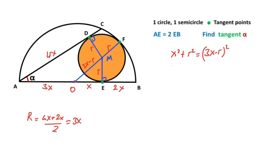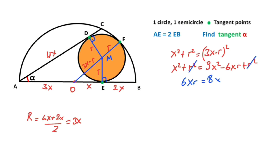Expanding: x squared plus r squared equals 9x squared minus 6xr plus r squared. The r squared terms cancel, so 6xr equals 8x squared. If we simplify, 6r equals 8x. Dividing both sides by 2, we get 3r equals 4x.